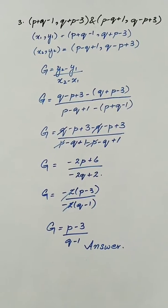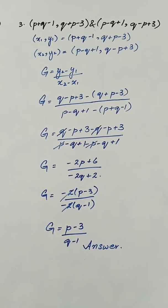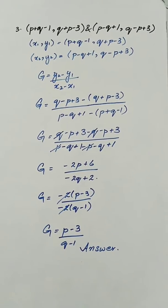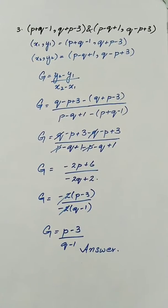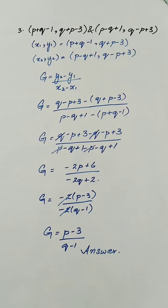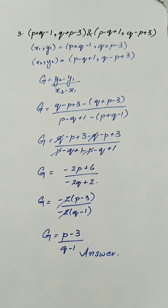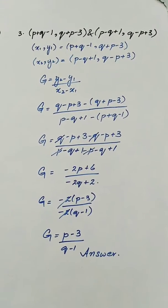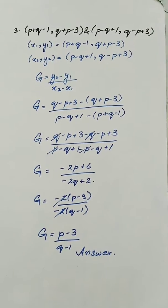Now here we will have another question in which (p + q - 1, q + 3 - 3) are x1 and y1 coordinates and (p - q + 1) and (q - p + 3) are x2 and y2 coordinates. In order to find out the gradient, we put these values into the formula y2 - y1 over x2 - x1. Here y2 is (q - p + 3). We have to take care of the sign as the minus sign in the formula will be applied to the whole term of y1, so we take it in brackets: minus (q + p - 3) over (p - q + 1) minus x1 which is (p + q - 1).